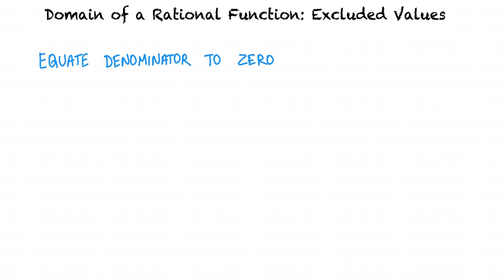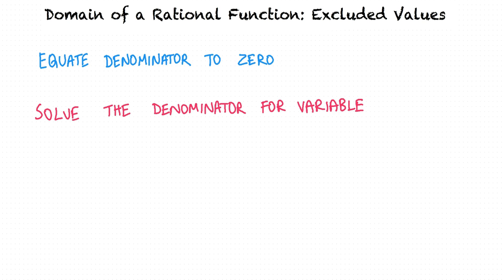In order to obtain the excluded values — that is, the values not included in the domain — we equate the denominator to zero and solve the denominator for the variable.